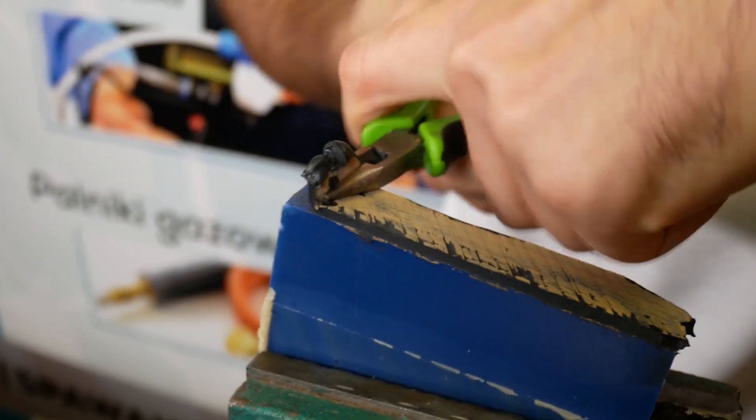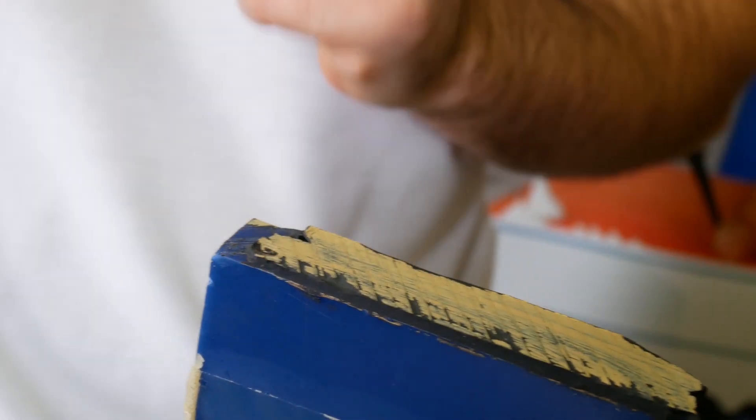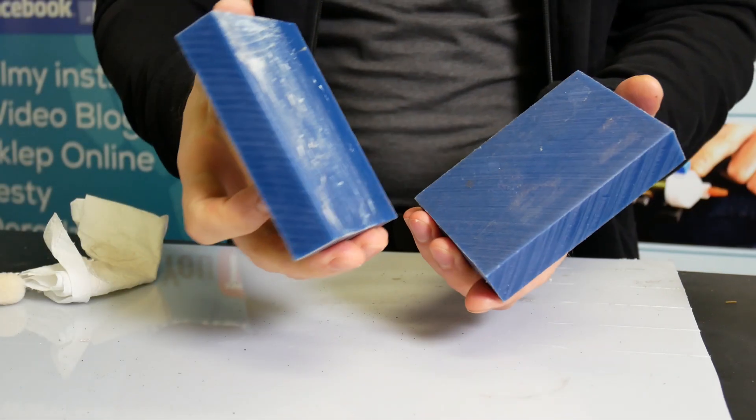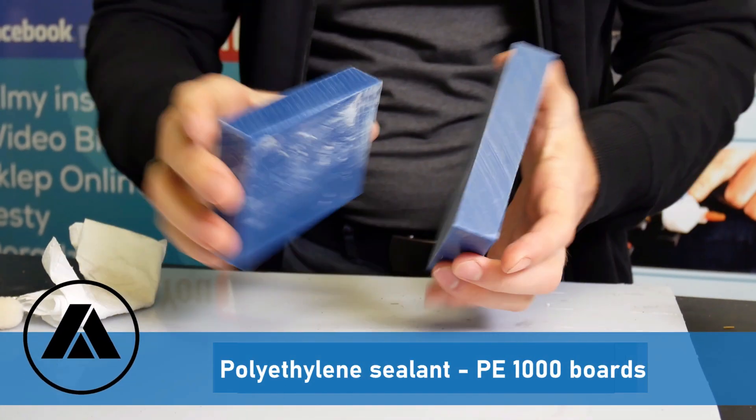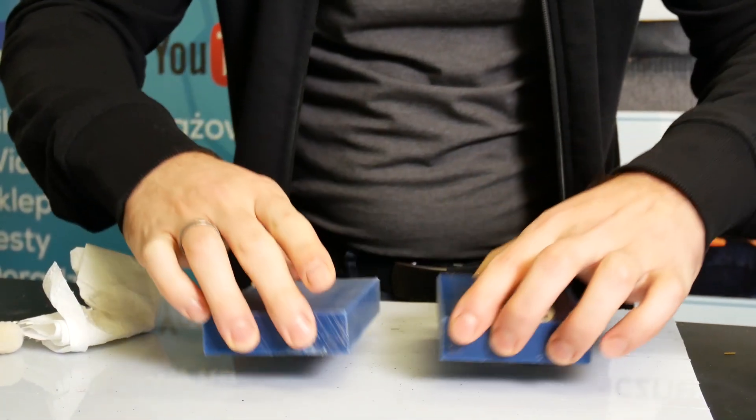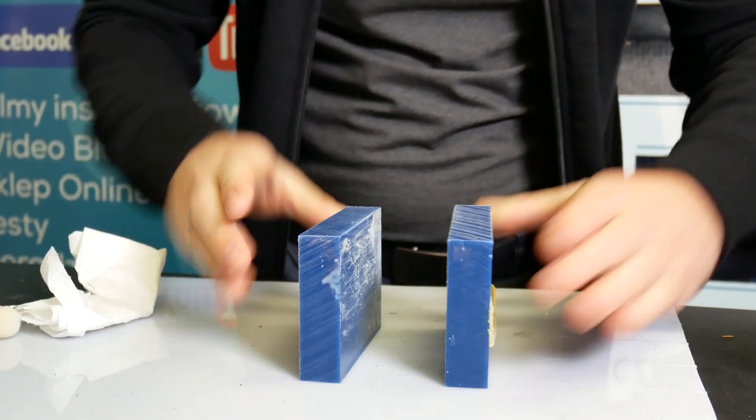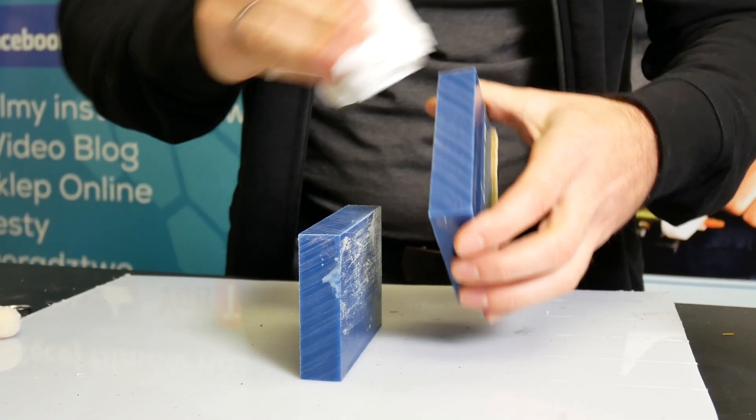Take a look at that. Today we are testing PE 1000. Earlier I sealed it with PP102, no problem. As you can see, the boards are sealed like so. The surface has been cut, grinded, and degreased.